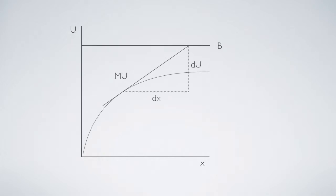Marginal utility times dx is du, but such du is invisible. Bliss cannot be attained.